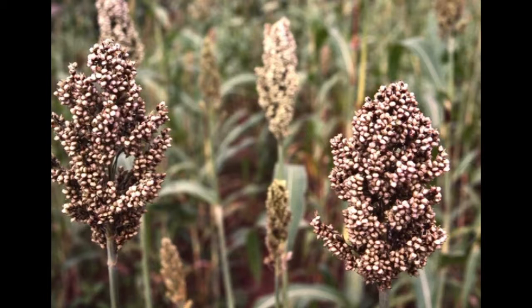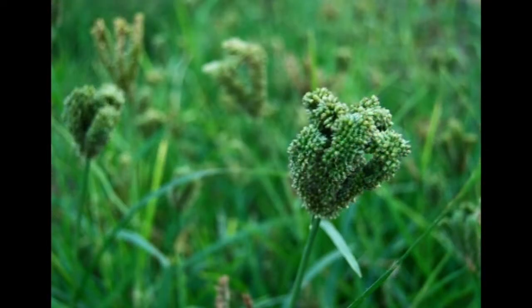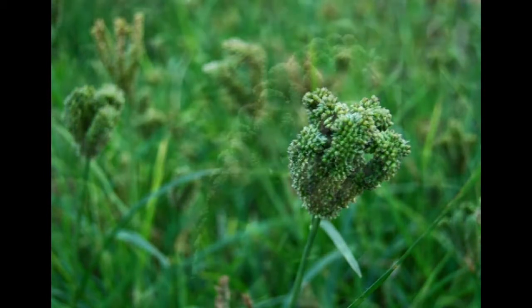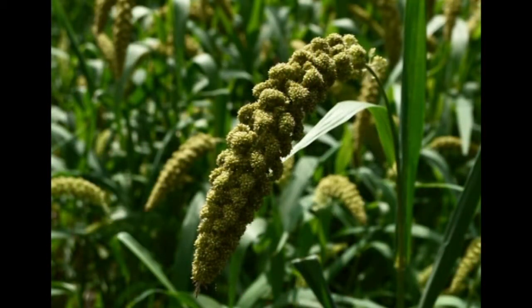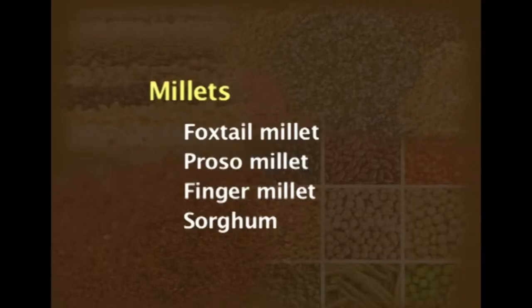Moving to module 3 on cereals and millets, this module concentrates only on millets. Millets are called the poor man's cereal; they are very rich sources of energy and are mostly grown in the arid and semi-arid parts of the world. They are more popular in Eastern nations than in the West, and include several millets such as foxtail millet, proso millet, finger millet and sorghum.